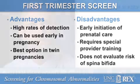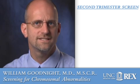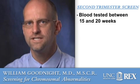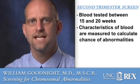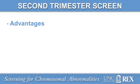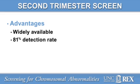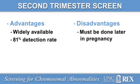Follow-up screening is often offered. In the second trimester screen, maternal blood is tested between 15 to 20 weeks gestational age. Certain characteristics of the blood are measured to calculate the chance of chromosomal abnormality. This blood test can be done in any physician's office and sent to central labs, which makes it widely available. The detection rate for Down syndrome, while slightly lower than first trimester screening, remains good at 81%. The disadvantage is that it must be done in the second trimester, somewhat later in pregnancy.